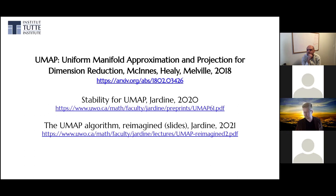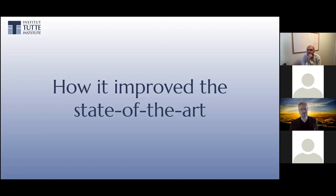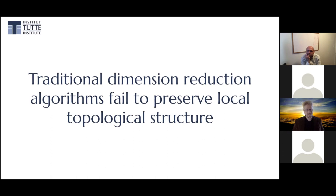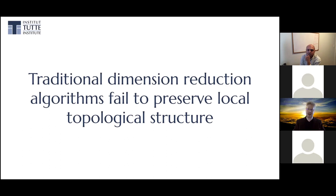How did UMAP improve on the state of the art? Density didn't make sense in high dimensions — we've reduced the dimension, so now density makes a whole lot more sense and we can do HDBSCAN and persistence in good ways. The notion of dimensionality reduction followed by clustering isn't particularly new — spectral clustering did PCA then K-Means. The modern win is that we're using manifold learning techniques to reduce the dimension instead of these linear matrix factorization techniques.